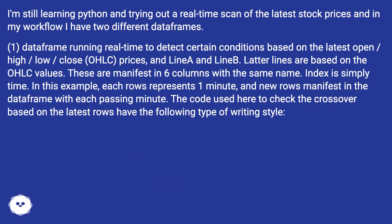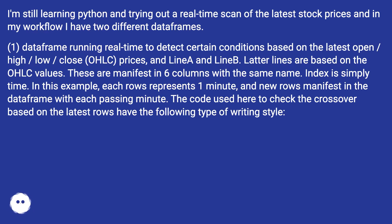I'm still learning Python and trying out a real-time scan of the latest stock prices. In my workflow I have two different dataframes. One dataframe runs real-time to detect certain conditions based on the latest open/high/low/close (OHLC) prices and linear and lenapp lines, which are based on the OHLC values. These are manifest in six columns with the same name. The index is simply time, and each row represents one minute, with new rows added to the dataframe each passing minute.